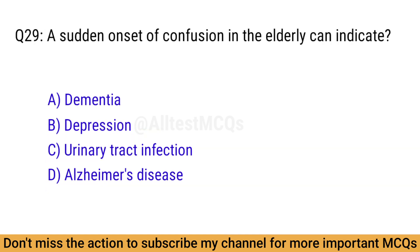Q29. A sudden onset of confusion in the elderly can indicate? The right answer is option C: Urinary tract infection.